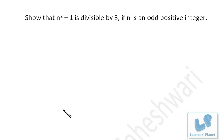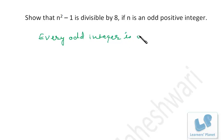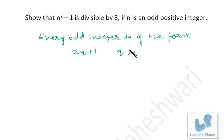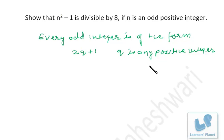Now let's see this problem: show that n² - 1 is divisible by 8 if n is an odd positive integer. In the previous sessions we have already discussed that every odd integer is of the form 2q + 1, where q is any positive integer.